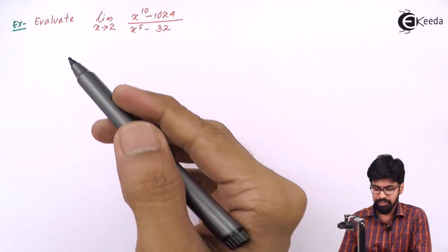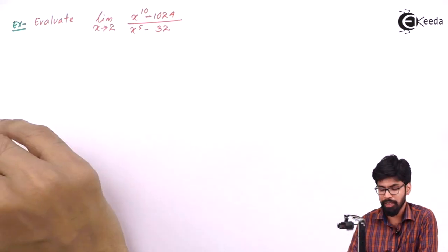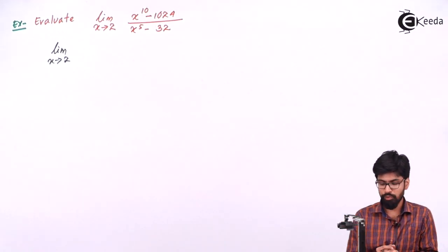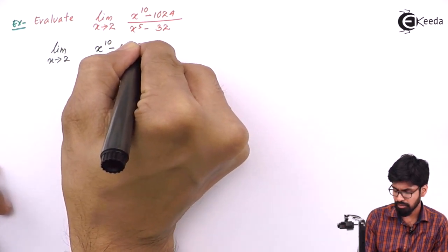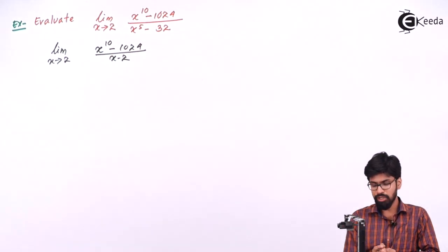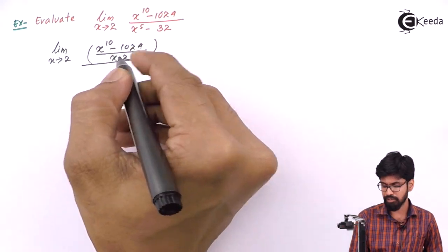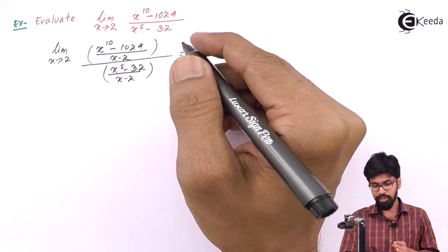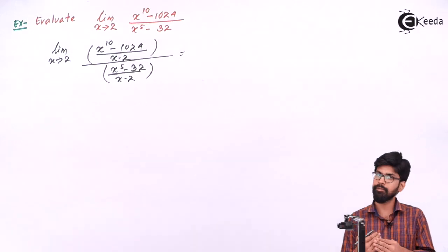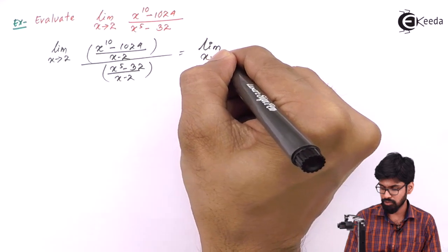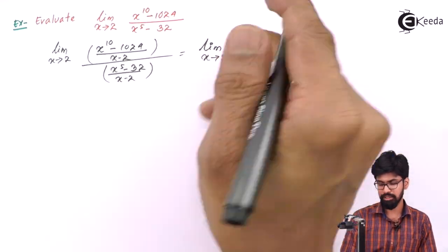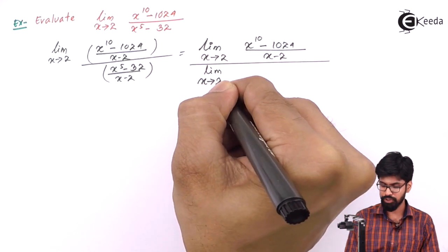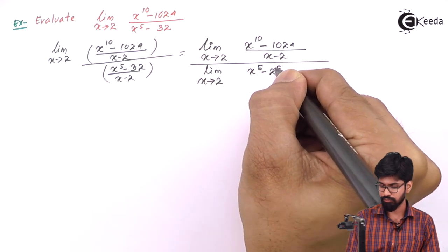Let us consider this example: evaluate limit x tends to 2, x raise to 10 minus 1024 upon x raise to 5 minus 32. Here we don't see the direct formula, so we divide both numerator and denominator by x minus 2. Since limit of f(x) upon g(x) equals limit of f(x) upon limit of g(x), this becomes: limit x tends to 2 of x raise to 10 minus 1024 upon x minus 2, divided by limit x tends to 2 of x raise to 5 minus 2 raise to 5 upon x minus 2.